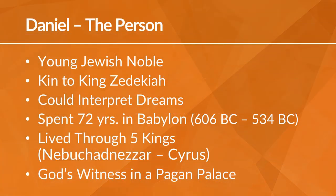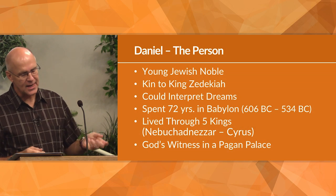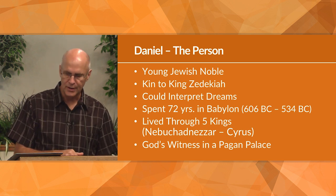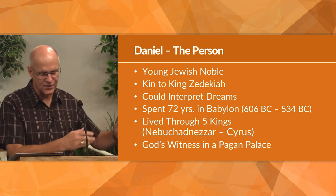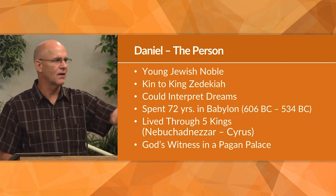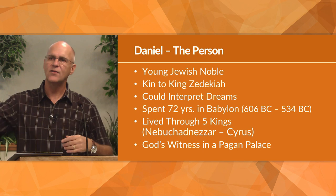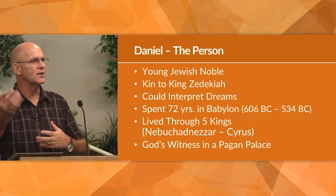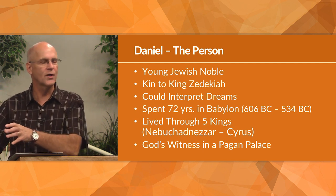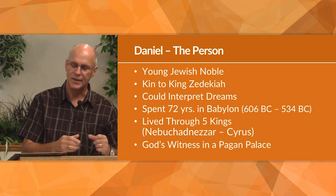Daniel was of a noble family — probably royal blood. Josephus, the Jewish historian at the time of Christ, says Daniel was probably related to King Zedekiah of Judah, which is why Daniel and his friends had access to the Babylonian court. The Babylonians took the cream of the crop of young educated men from the royal court; Daniel ending up in the king's court suggests he was part of the royal court in Israel as well.